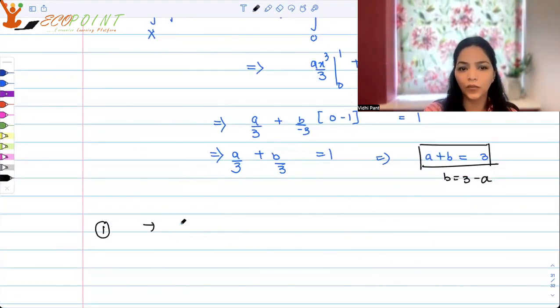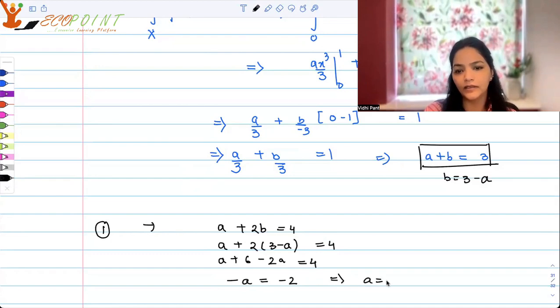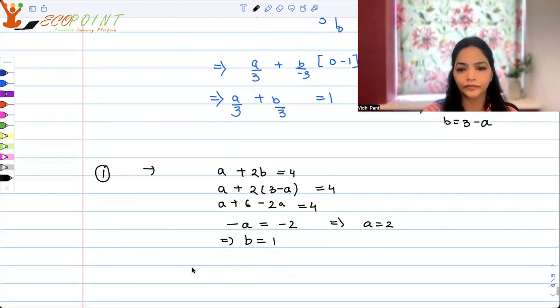So from here I can say b is equal to 3 minus a. Now substituting this in equation 1, we will get a plus 2 into 3 minus a equals to 4. So that means a plus 6 minus 2a equals to 4, which basically means that minus a is equal to minus 2. That implies a is equal to 2. If a is equal to 2, that implies b is equal to 3 minus 2, that is 1. So a is 2 and b is 1.